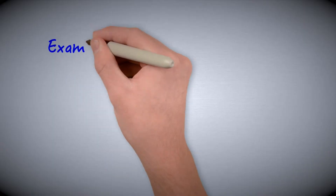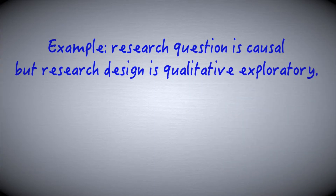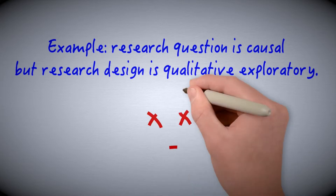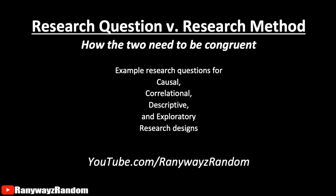For example, we might see in a student's thesis that the research question is a very causal question, but the research method is exploratory qualitative. This incongruence or inconsistency can sometimes lead to unfavorable assessment of the thesis. So in this video, I wish to quickly and clearly highlight what kind of questions should be formulated for different types of research and what sort of research methodological approaches would be best suited for these different types of research questions.